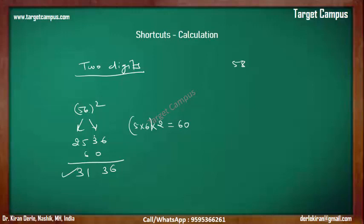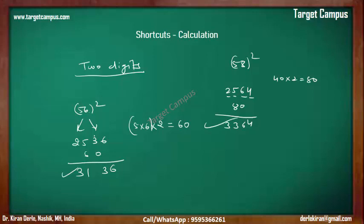One more: 58 squared. Left part: 5 squared is 25. Right part: 8 squared is 64 — remember, 2 digits. Middle: 5 into 8 is 40, twice of that is 80. We write 80 in the middle. Working it out: the answer is 3364.